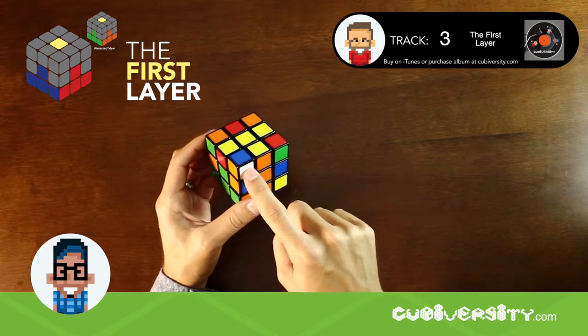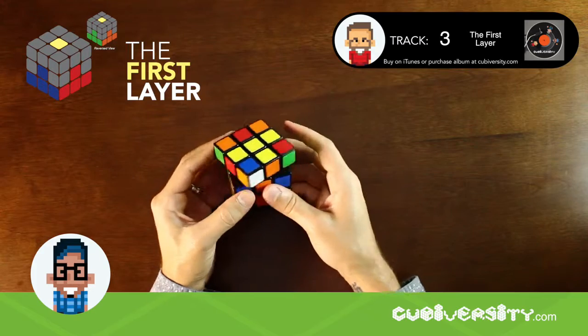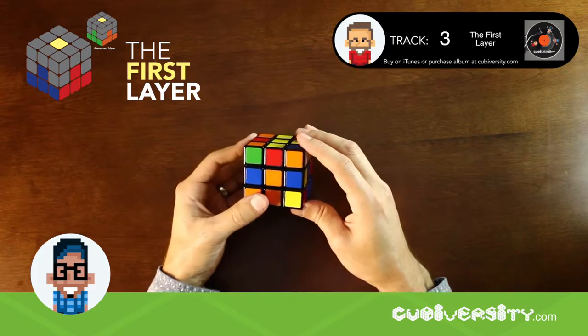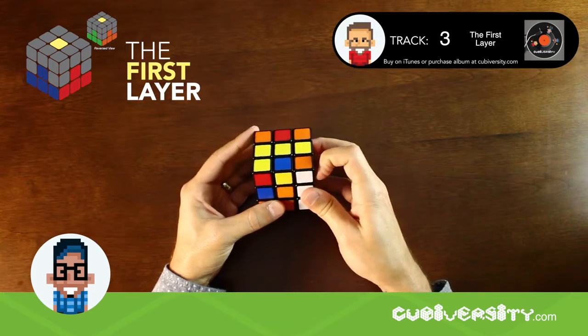We have now reoriented the cubie so the sticker is facing the correct way. Reposition it over the corner where it will end up and perform R, U, R prime.